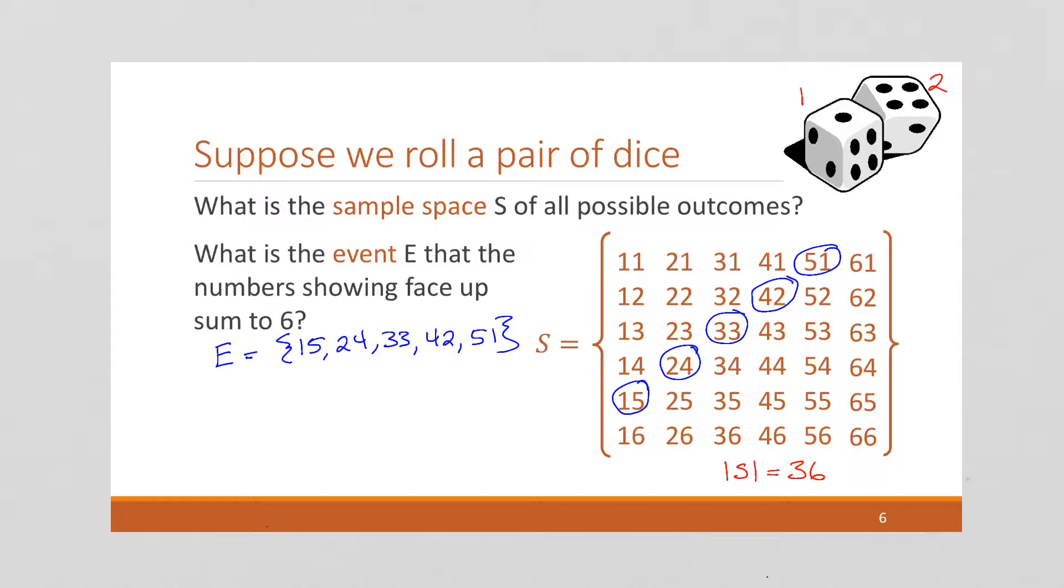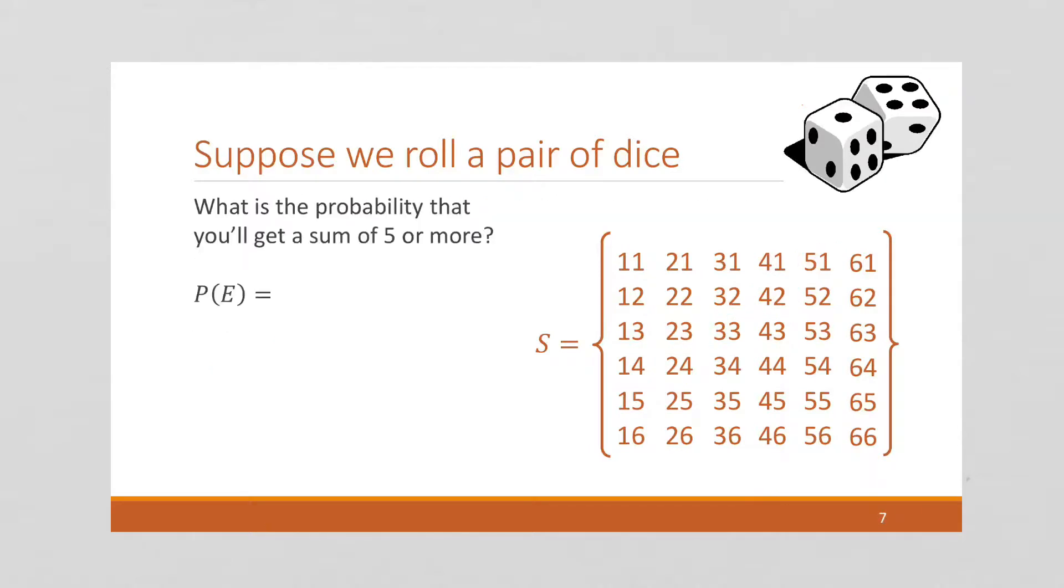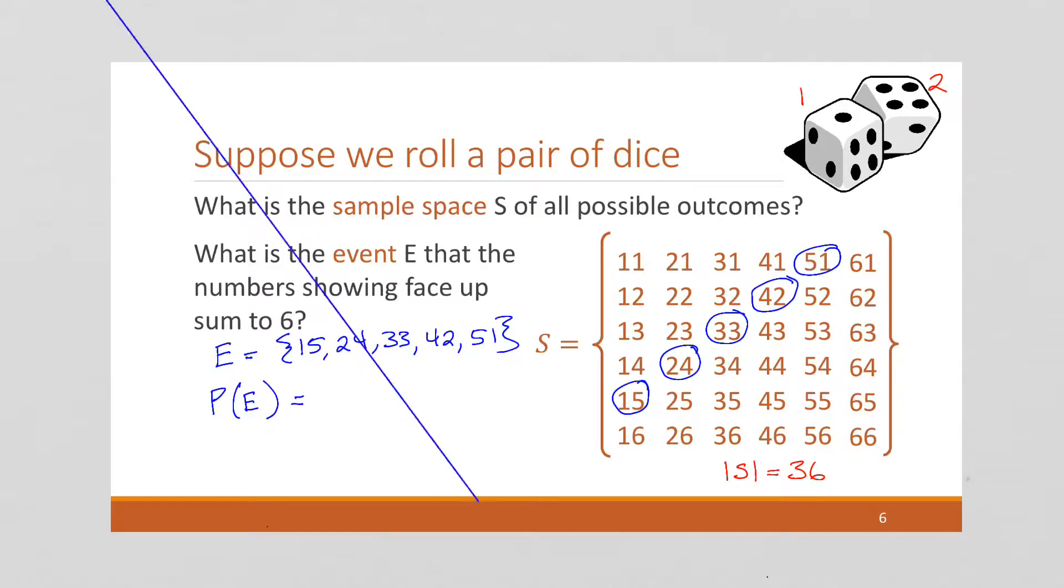Which, and recall the equally likely probability formula, these are all equally likely, they're random dice, there's not going to be bias. So I can say the probability of E occurring is going to be the size of E over the size of S. Well, the size of E is 5. The size of S is 36. So this is going to give us 13.9%. So there's a 13.9% chance of having your pair of dice land with the sum of 6 on the top.